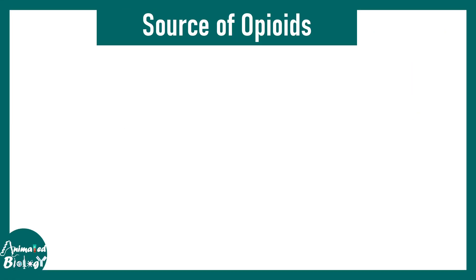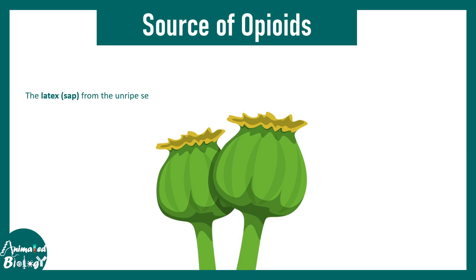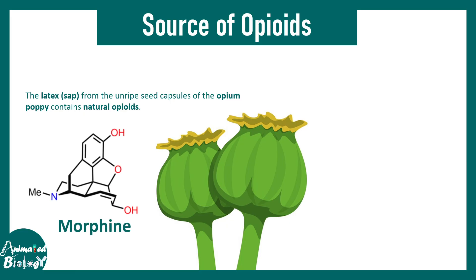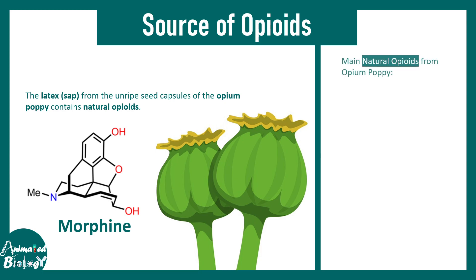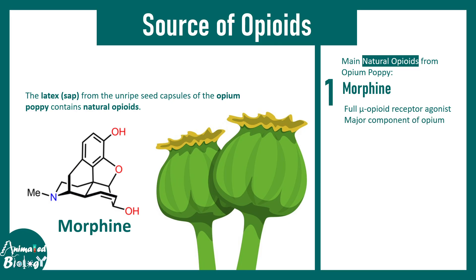But first of all, where can we find opioids? Opioids can be found from the sap of the opium poppy tree. There are natural opioids like morphine — you might have heard about morphine in the context of analgesics. Morphine is a full agonist for mu opioid receptors, is a major component of opium, and is extensively used as an analgesic.